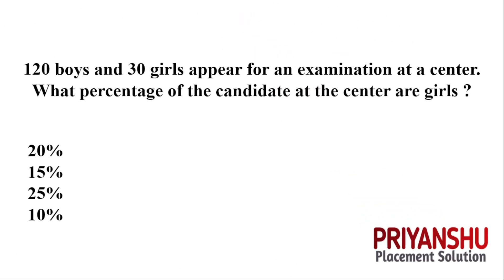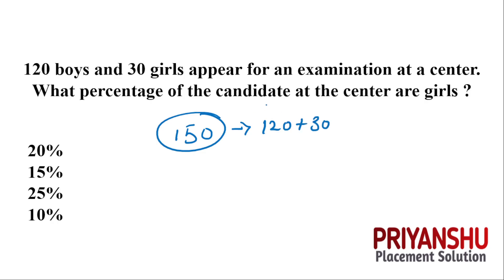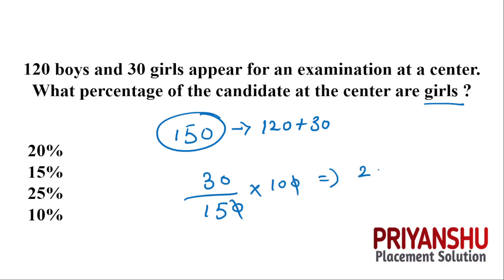Next question: 120 boys and 30 girls appear for an examination. Total students = 150. We need to find the percentage of girls: 30 divided by 150 multiplied by 100 = 20 percent. The answer is 20 percent.